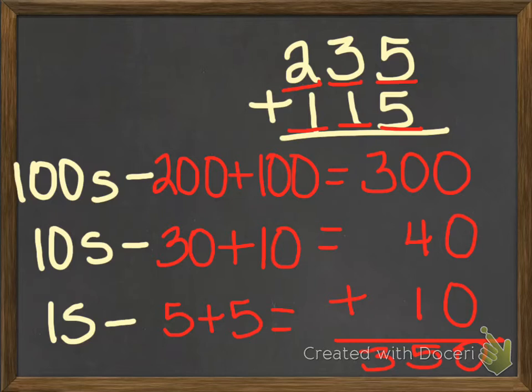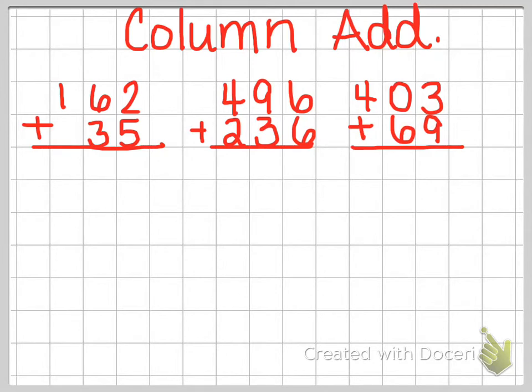So that is partial sums. Now we're going to take a look at regular column addition. And I've got 3 problems here for us to look at, and I put it on grid paper, because that's what we're doing. We are adding in columns.